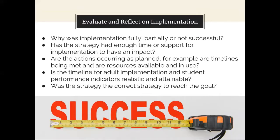When evaluating and reflecting on implementation, here are some additional questions to consider: Why was implementation fully, partially, or not successful? Has the strategy had enough time or support for implementation to have an impact? Are the actions occurring as planned—are timelines being met and are resources available and in use? Is the timeline for adult implementation and student performance indicators realistic and attainable? And was the strategy the correct strategy to reach the goal? Please pause the webinar and reflect on these questions with your team.